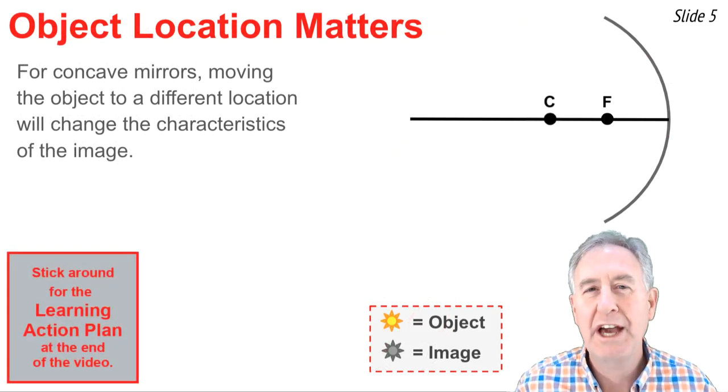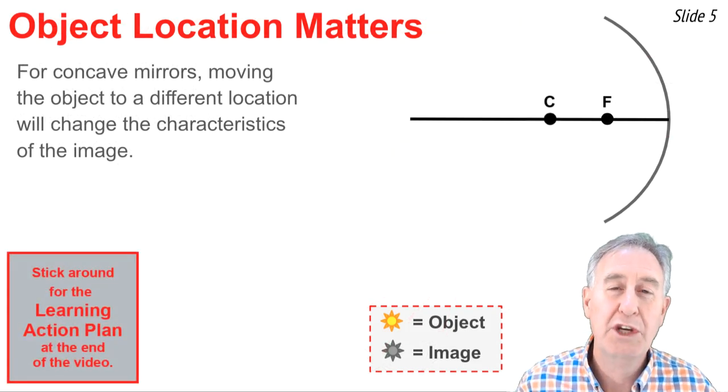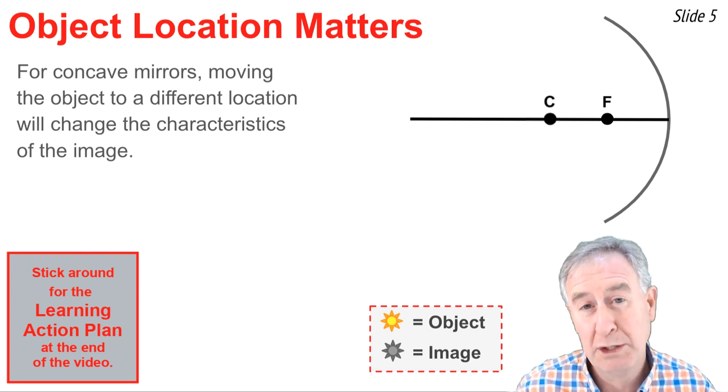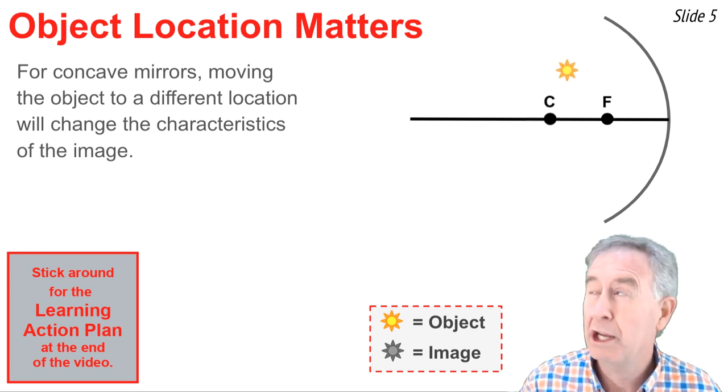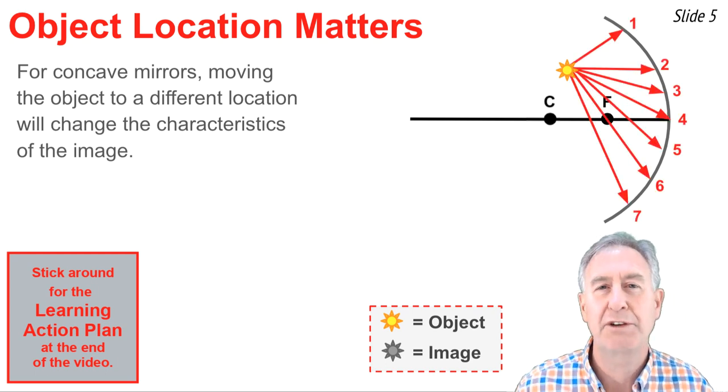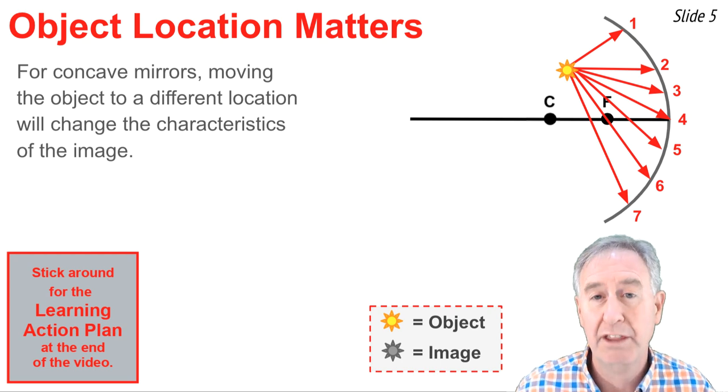For concave mirrors, moving the object to a different location will change the characteristics of the image, but it won't change the principles by which the image is created. So here we have an object moved to a position closer to the mirror, and here's seven incident rays from the light bulb that strike the mirror.